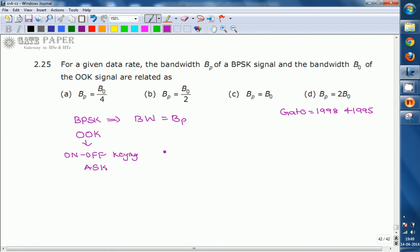Now for a given data rate, the bandwidth of BPSK is 2fb. The signaling rate Rb equals 2fb divided by 2, which equals fb.